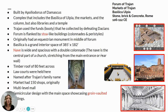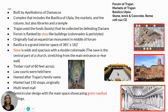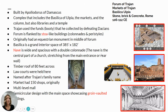Historically, the entire Trajan Forum was built using the booty — another term for the funds collected after defeating the Dacians. That was a big triumph that Trajan led over the Dacian War. After defeating the Dacians, they basically had to pay fines, and Trajan used that money to build this entire complex.